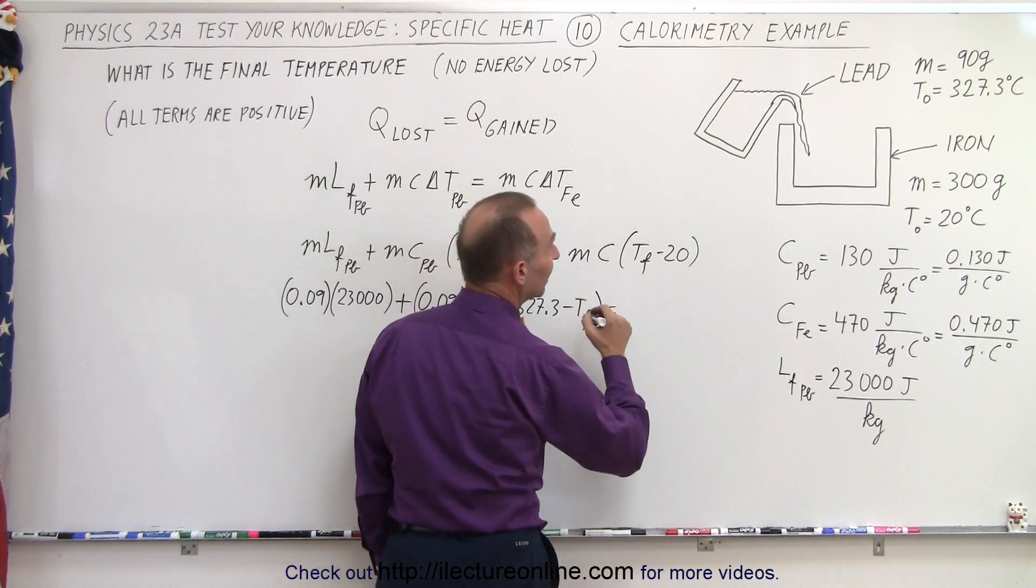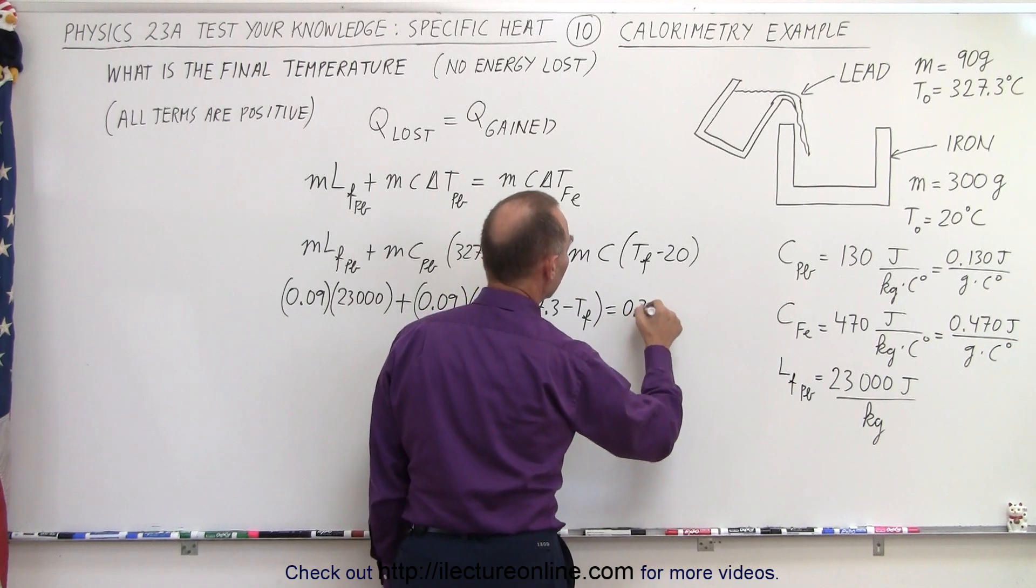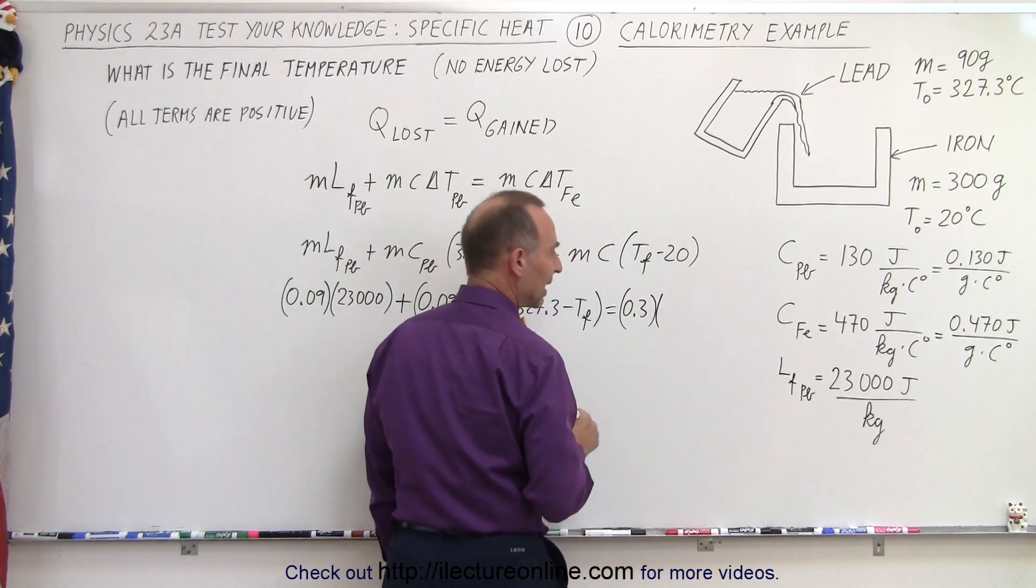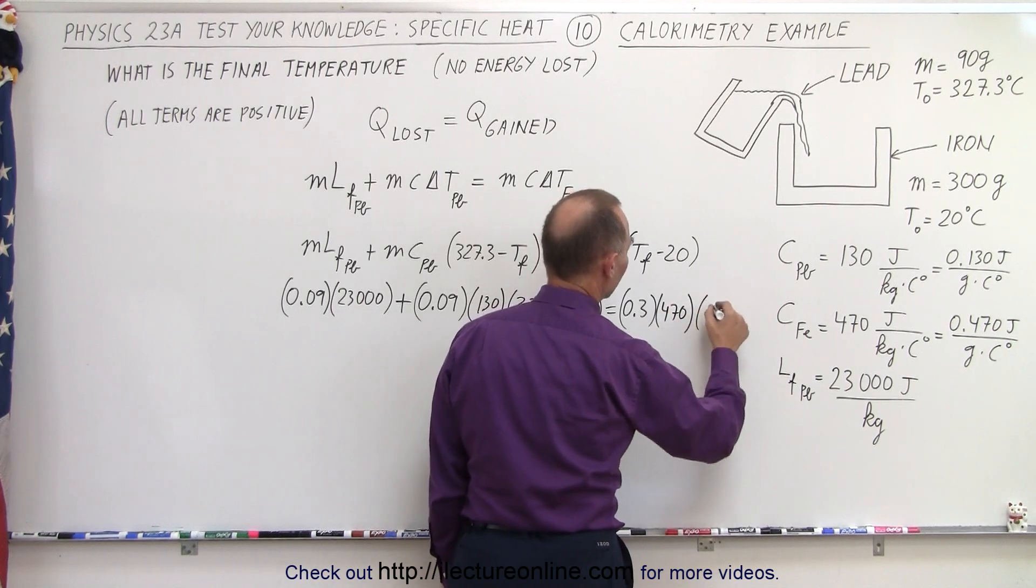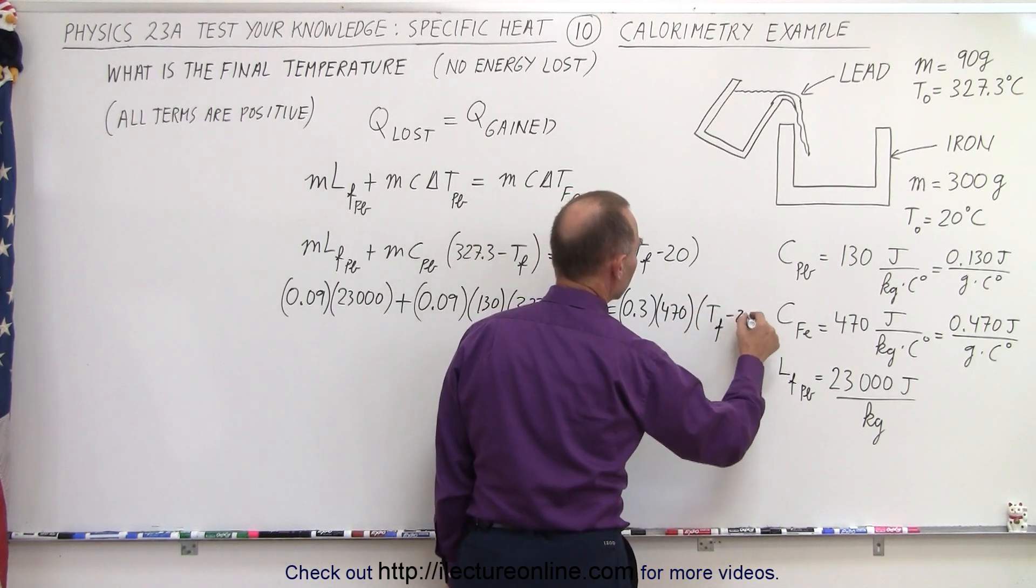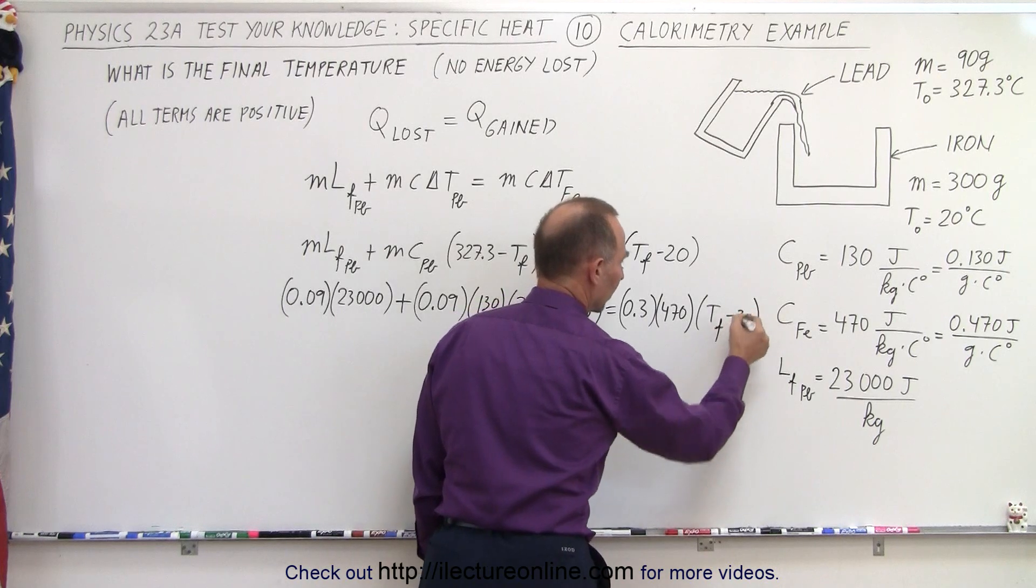That equals the mass of the iron, which is 0.3, times the specific heat, which is 470, times the difference between the final temperature and the initial temperature.